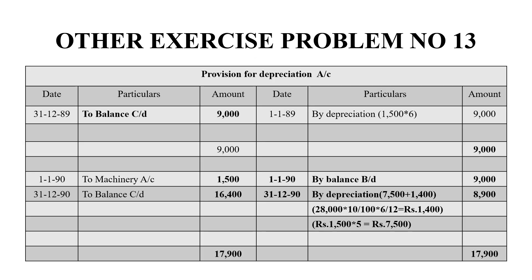Now we have to prepare the provision for depreciation account. In the first year, depreciation per machine is Rs.1,500, and we are running 6 machines, so Rs.1,500 × 6 = Rs.9,000. That is balanced on the debit side, and the grand total on both sides is Rs.9,000.